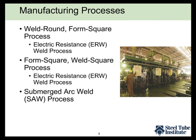There are really three main ways in which HSS sections are produced: the weld round form square process, the form square weld square process — both of which use electric resistance welding to weld the seam together — and the submerged arc weld process, which joins two seams.